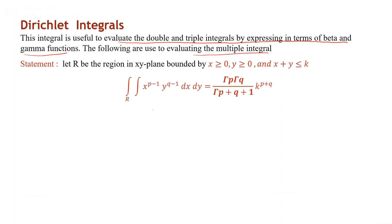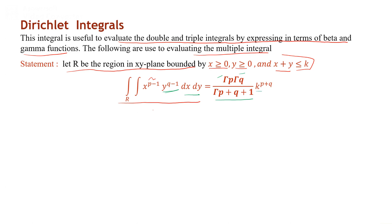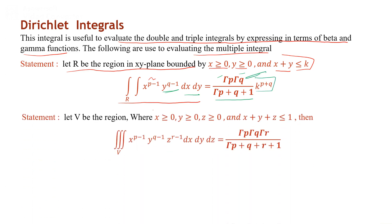Statement 1: Suppose we have a region R in the xy-plane bounded by x greater than 0, y greater than 0, and x + y less than or equal to some constant k. Then the double integral of x^(p-1) y^(q-1) dx dy equals gamma(p) * gamma(q) / gamma(p + q + 1) multiplied by k^(p+q).